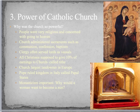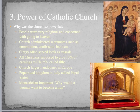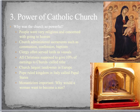Another thing that gave the church power is that they administered sacraments — rituals like communion, confession, and baptism — that people thought would help them on their journey to salvation or to heaven. Because the church controlled those, it gave them a lot of control over people. Clergy also served lords as vassals, so church officials were tied into the feudal system. All Christians were supposed to give 10% of their earnings to the church — this is called a tithe. In this time period it was really almost like a mandatory tax.